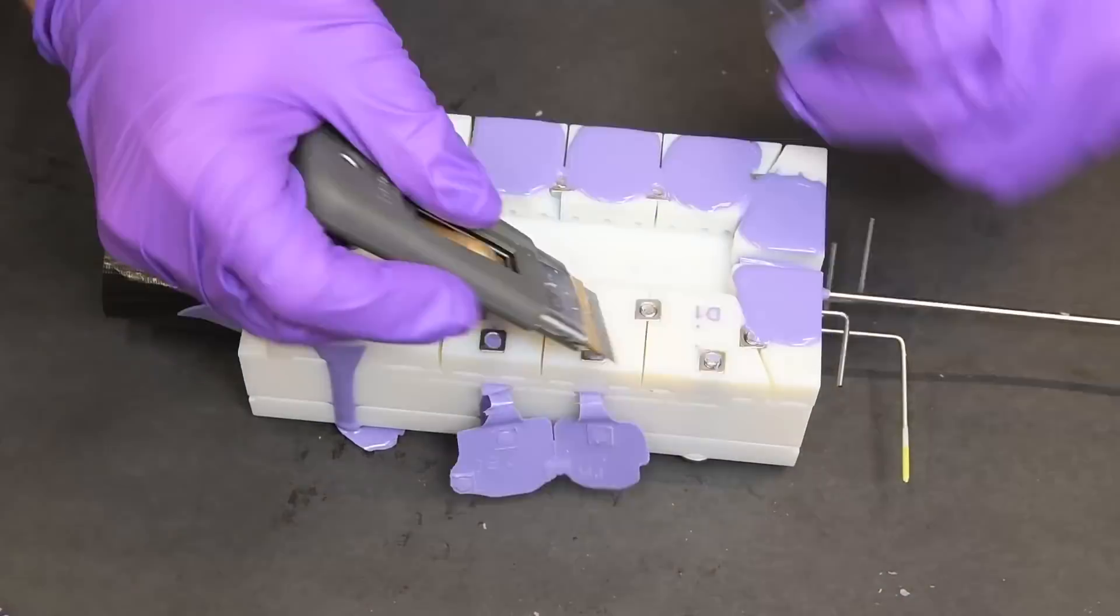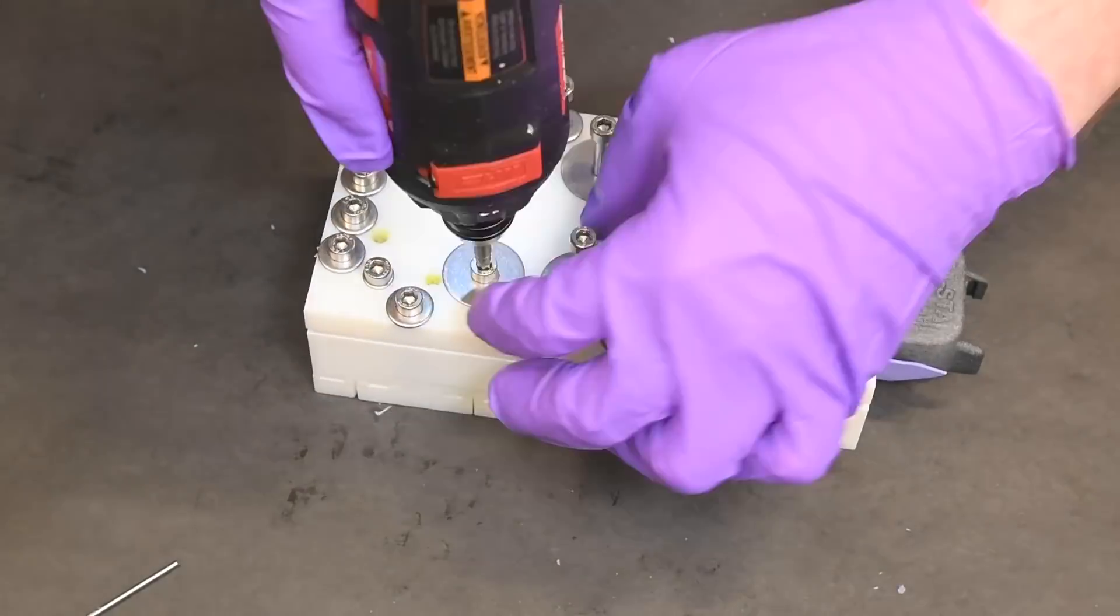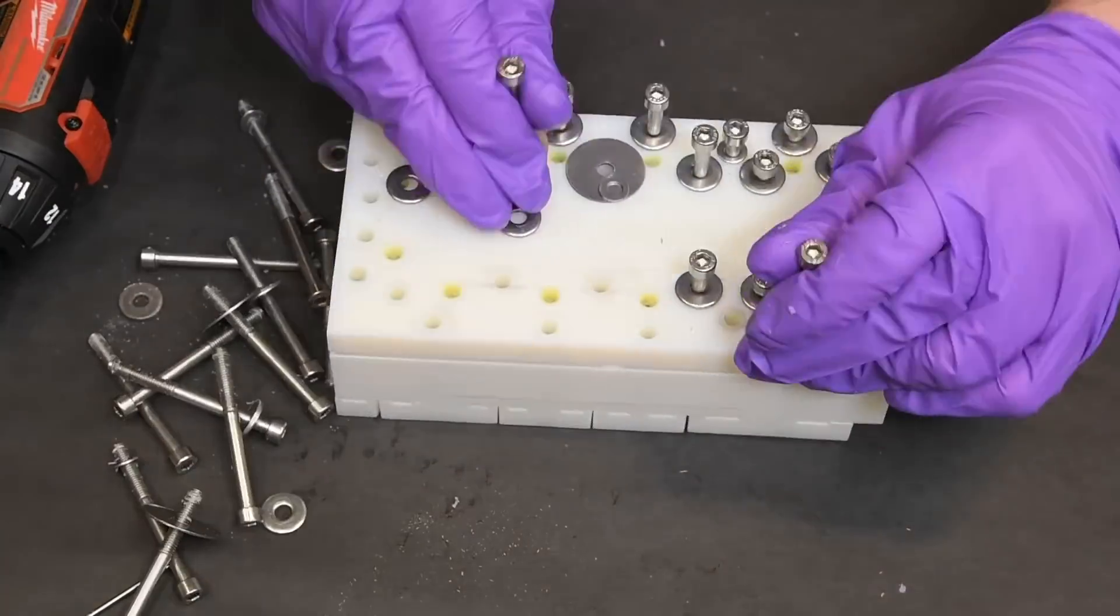After the part is cured, we then need to remove all excess silicone and the rods that we put in earlier. We also need to remove all the fasteners to be able to get all the various pieces of the mold apart.